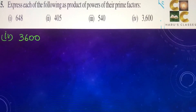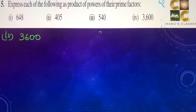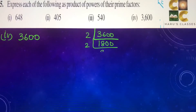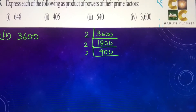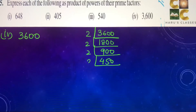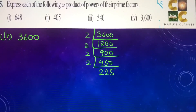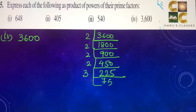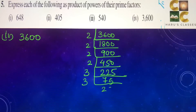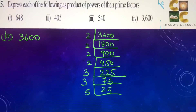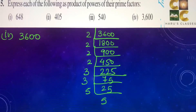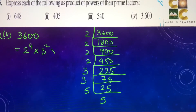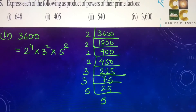Fourth part: 3,600. We begin with 2: 900, 450. Then 3's give us 75, 25, and 5. So we have 2 to the power 4 into 3 to the power 2 into 5 to the power 2.